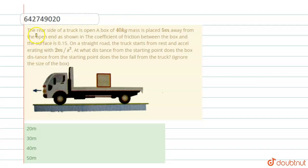Hello students, here is a question. The rear side of a truck is open. A box of 40 kg mass is placed 5 meters away from the open end as shown in the figure. The coefficient of friction between the box and surface is 0.15. On a straight road, the truck starts from rest with an acceleration of 2 meters per second squared. At what distance from the starting point does the box fall from the truck?